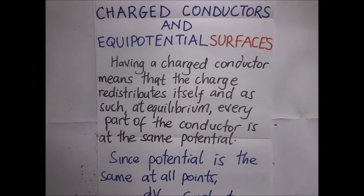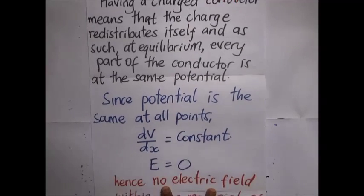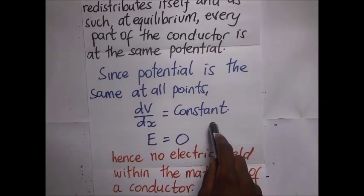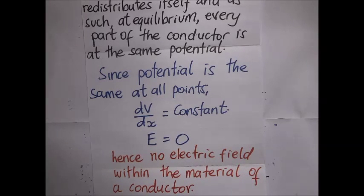Since potential is the same at all points, it means that dV/dx will be constant and so the intensity within a conductor will always be equal to zero. Hence no electric field lies within the material of a conductor.